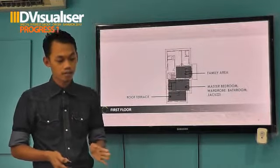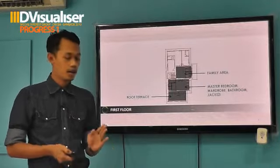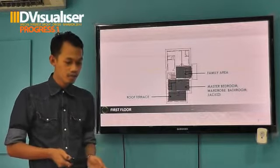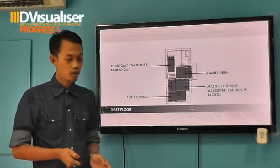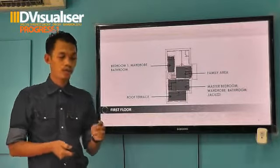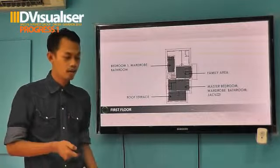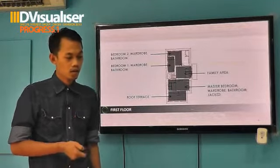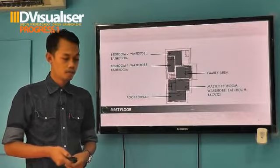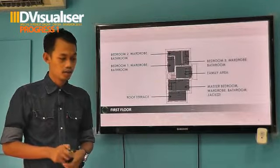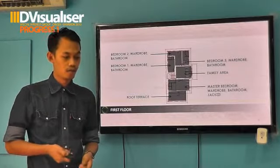The third part is a roof terrace. The roof terrace is a balcony. Then a bedroom, which includes a wardrobe and a bathroom. The second bedroom also has a wardrobe and a bathroom. The third room also has a wardrobe and a bathroom.